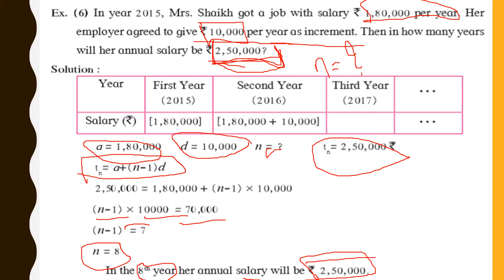Nothing is difficult in word problems of AP. In arithmetic progression, whatever word problems are there, they are simple. You just need to find out the values of a, d, and n. If you know this data, you can easily find out the values of t_n or summations. I hope you have understood how to solve these problems.